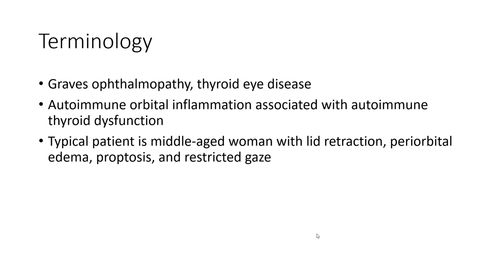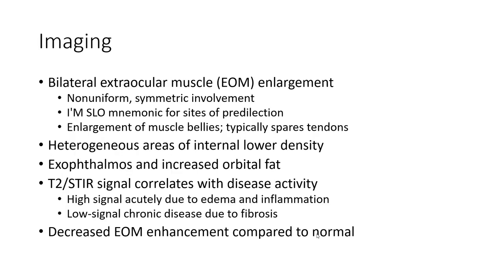The typical patient is middle-aged women. Imaging findings include bilateral extraocular muscle enlargement, non-uniform symmetric involvement, large muscle belly, typical sparing of the tendon insertion, heterogeneous areas of internal low density, exophthalmos, and increased orbital fat.